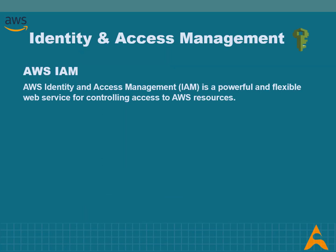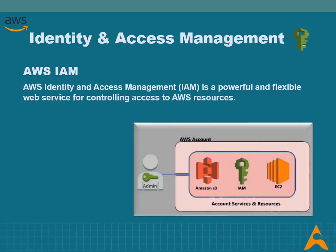In enterprise IT, it is all about defining and managing the roles and access privileges of individual network users, and the circumstances in which users are granted or denied those privileges. The core objective of an IAM system is one identity per individual. Once that digital identity has been established, it must be maintained, modified, and monitored throughout each user's access lifecycle.